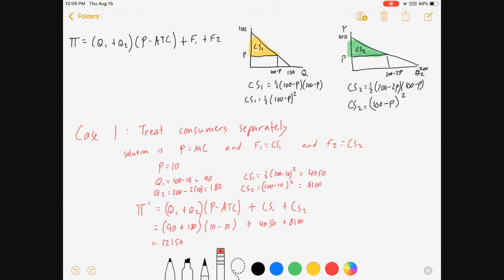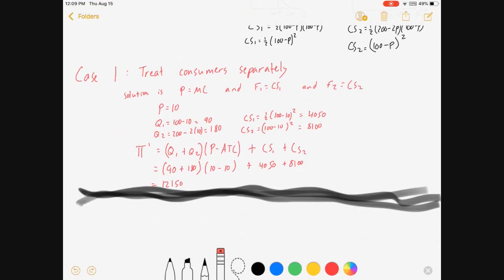This would be fine and dandy, nice for the firm if they can perfectly separate these two consumers and charge them both their consumer surplus. But what if that's not an option? That's why we're here, because so far this has been pretty easy.